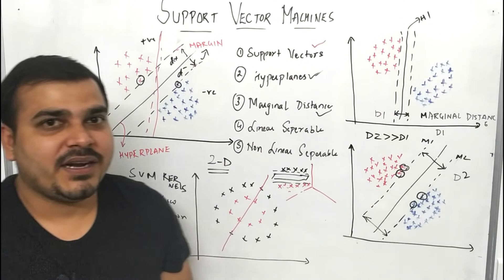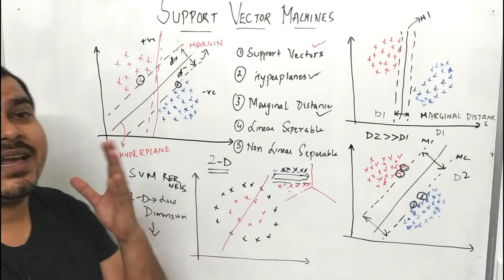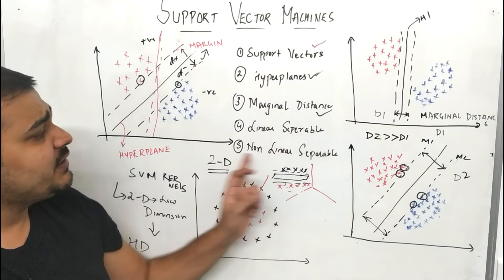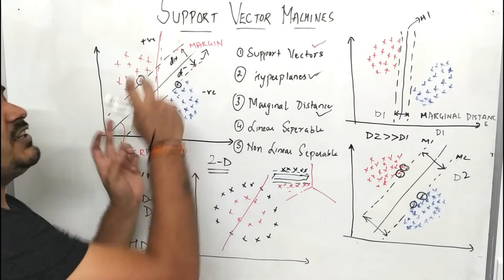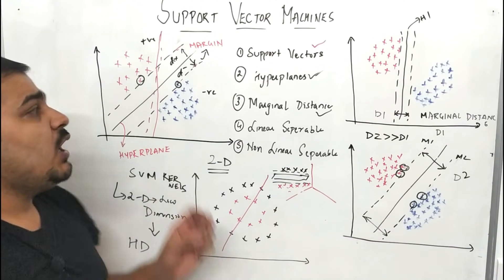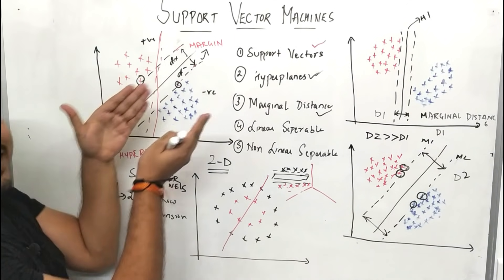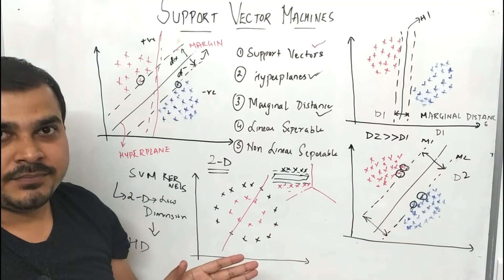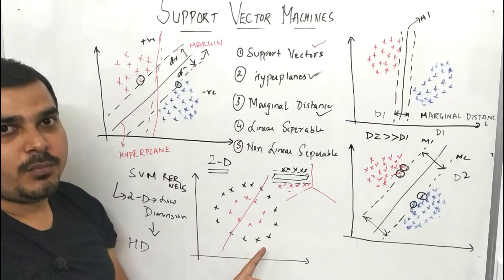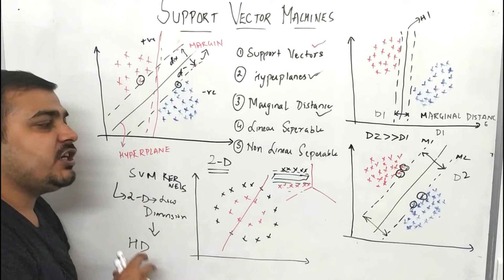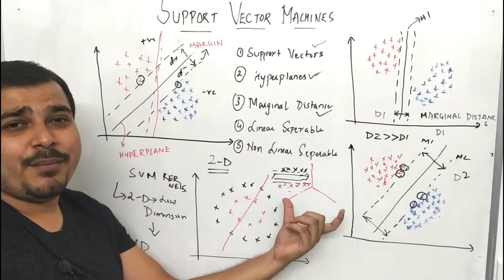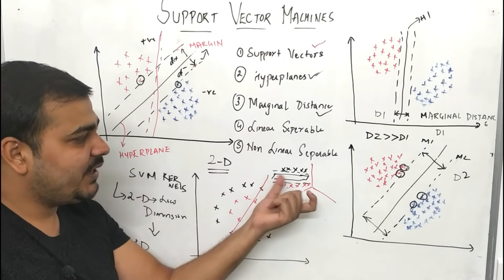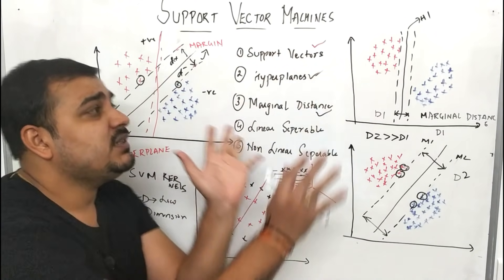We have just understood the basic understanding of Support Vector Machines. In future classes we'll discuss a lot of math about SVM kernels and their different types. Please remember the key terminologies: support vectors, hyperplane, marginal distance, linearly separable, and non-linearly separable. Our main aim is to create a generalized model not just by creating a hyperplane but by maximizing the marginal distance. The higher the marginal distance, the more generalized the model is. For non-linear separable points, we apply SVM kernels to convert low dimensions to high dimensions — two dimensions to three or four dimensions.